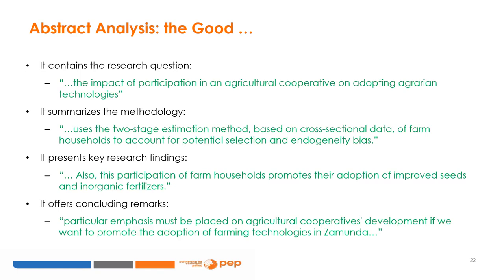Let us start with what is good about this abstract. It contains the research question: the impact of participation in an agricultural cooperative on adopting agrarian technologies. It summarizes the methodology: uses the two-stage estimation method based on cross-sectional data of farm households to account for potential selection and endogeneity bias. It presents key research findings: participation of farm households promotes their adoption of improved seeds and inorganic fertilizers. It offers concluding remarks: particular emphasis must be placed on agricultural cooperatives development if we want to promote the adoption of farming technologies in Zamunda.